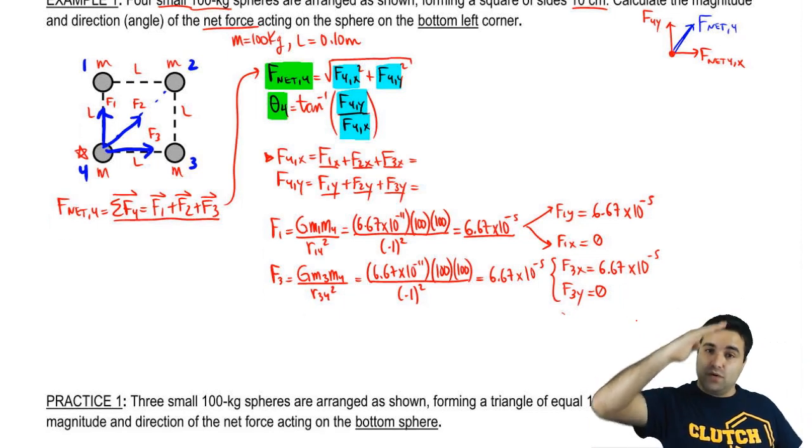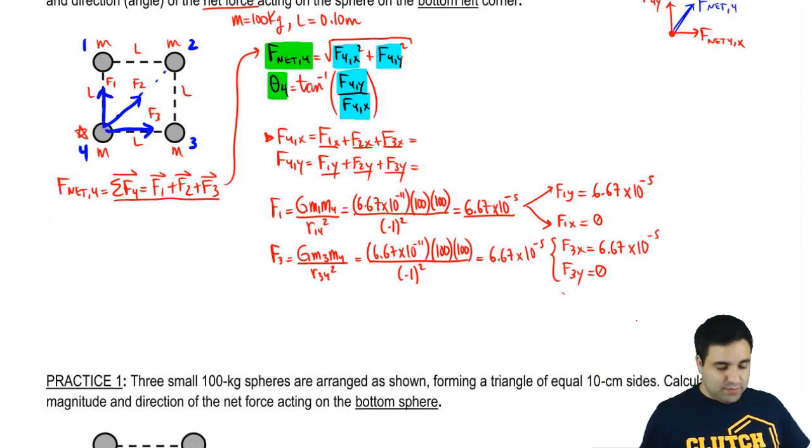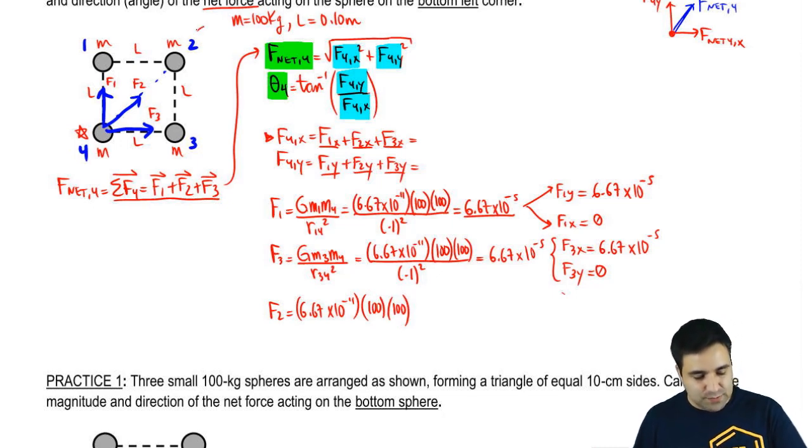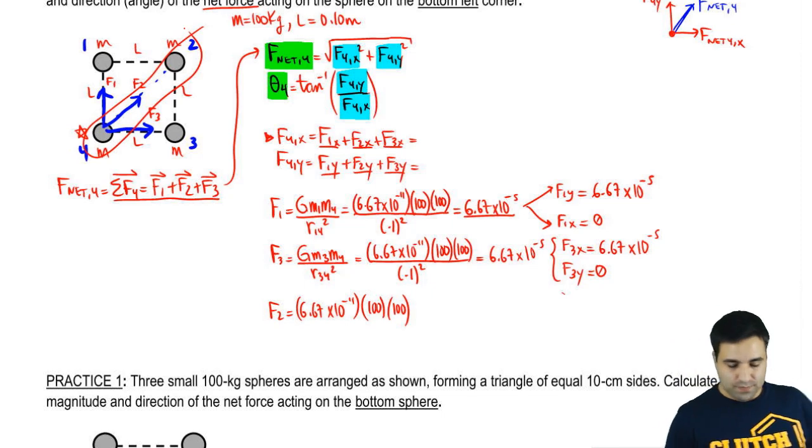F2, however, is at an angle, and when I calculate F2, I'm going to have to decompose it, and then the numbers will actually look different. So let's find F2 real quick. F2 is 6.67 times 10 to the negative 11, the two masses, again, 100 and 100. Now there's something that's different about F2. The distance between 4 and 2 is not L.